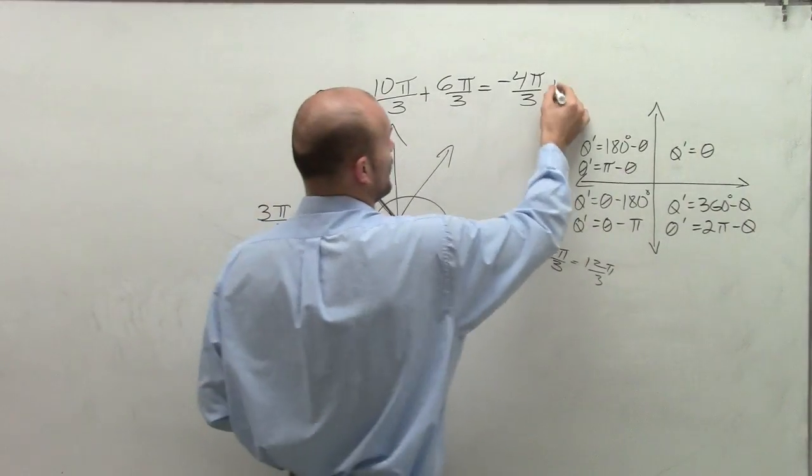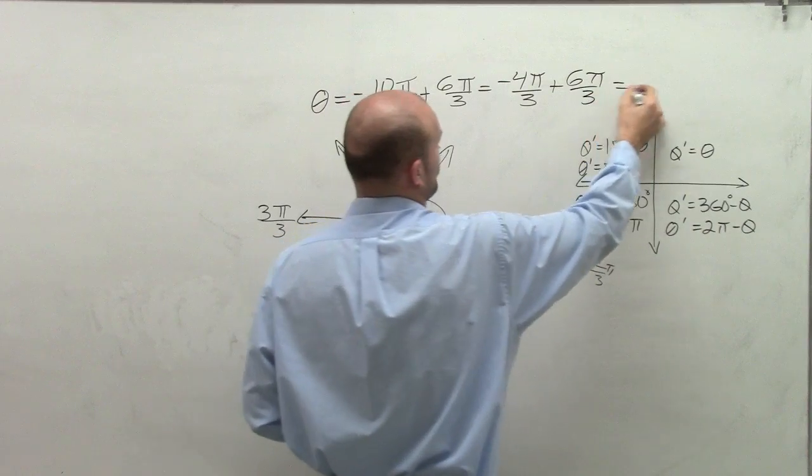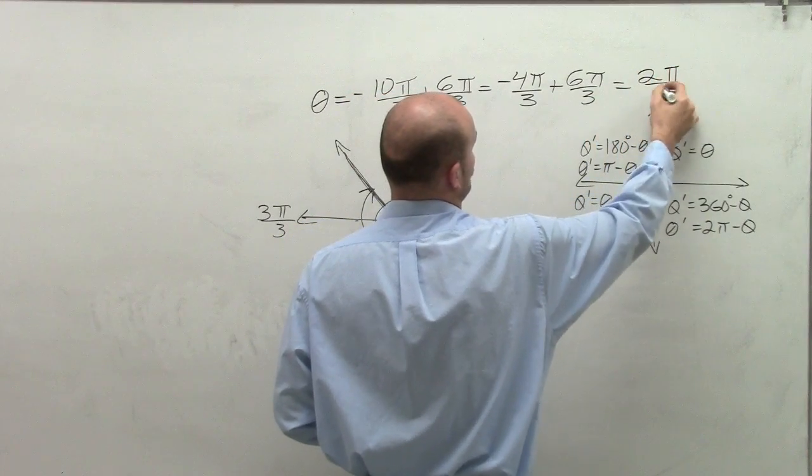So what I'm going to do is I'm going to add another revolution that's going to give me now 2 pi over 3.